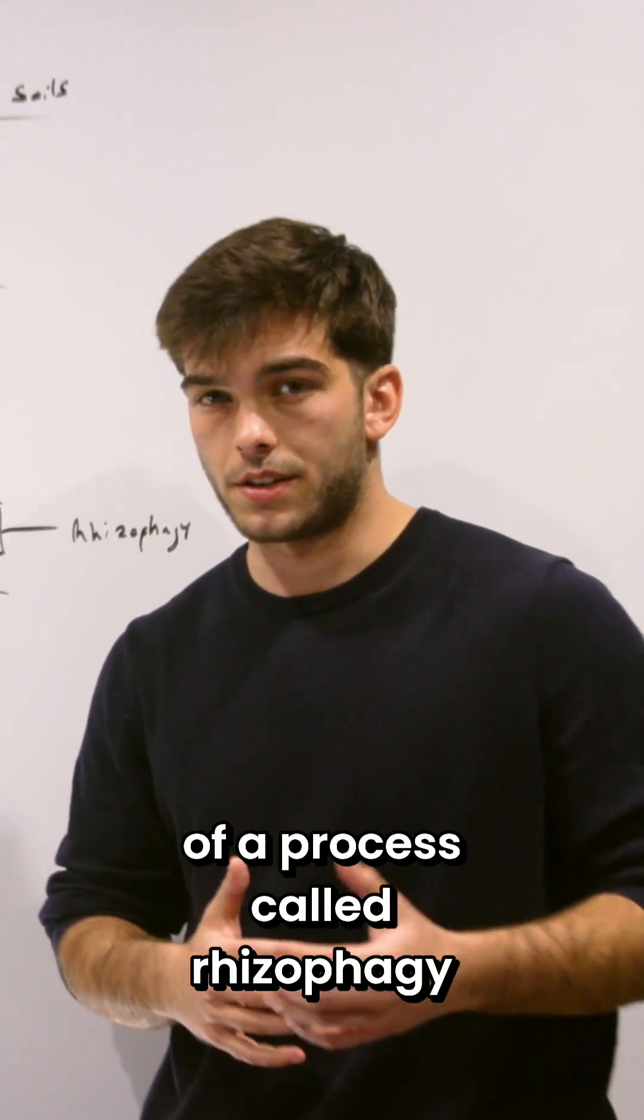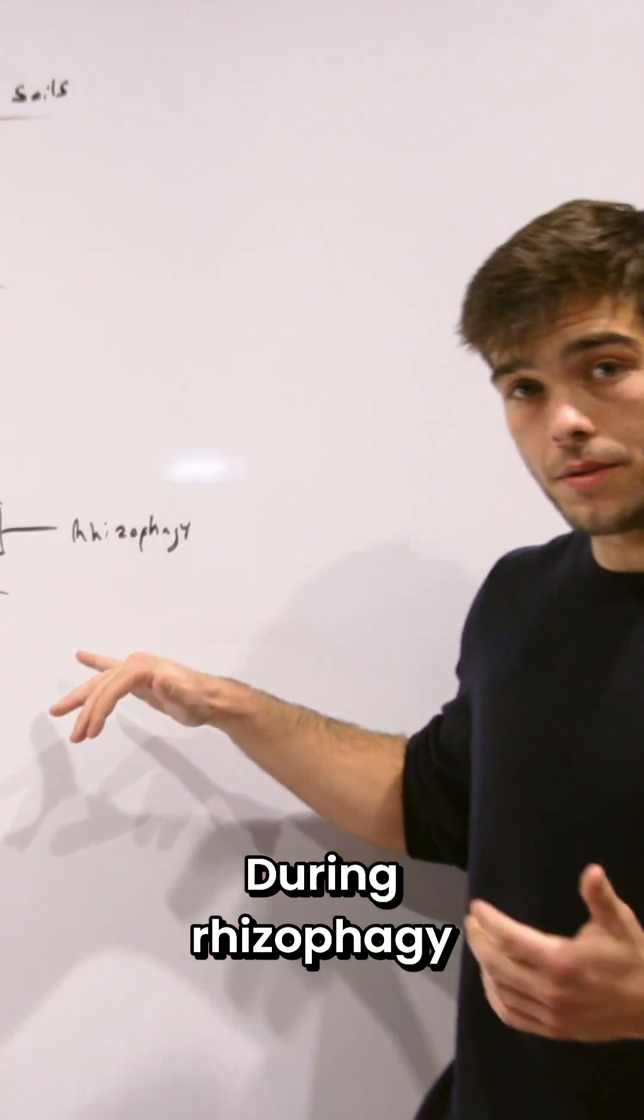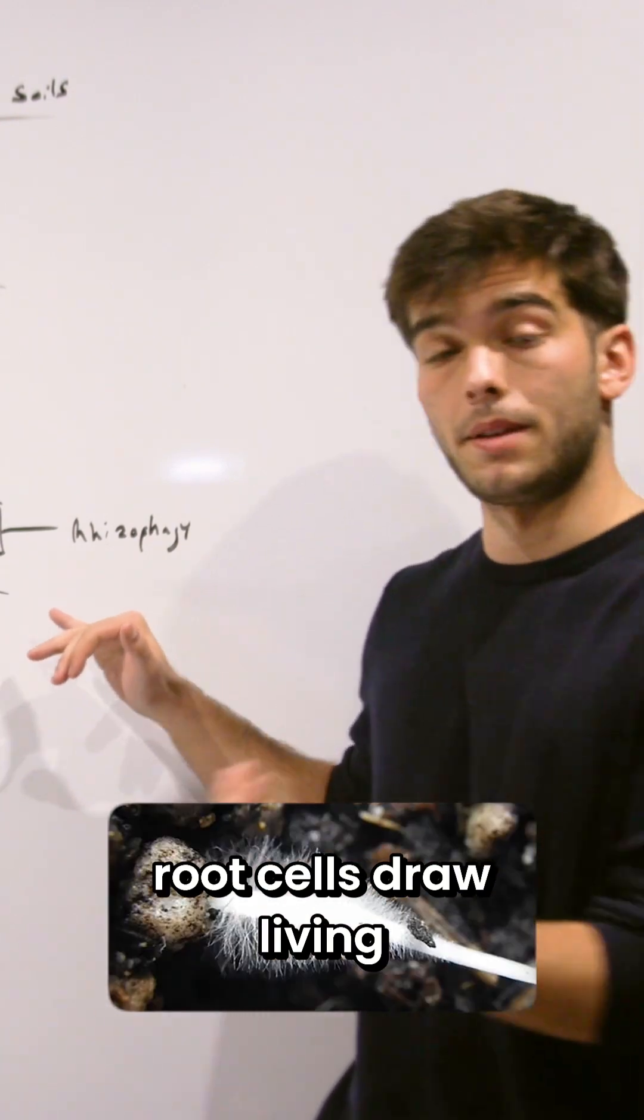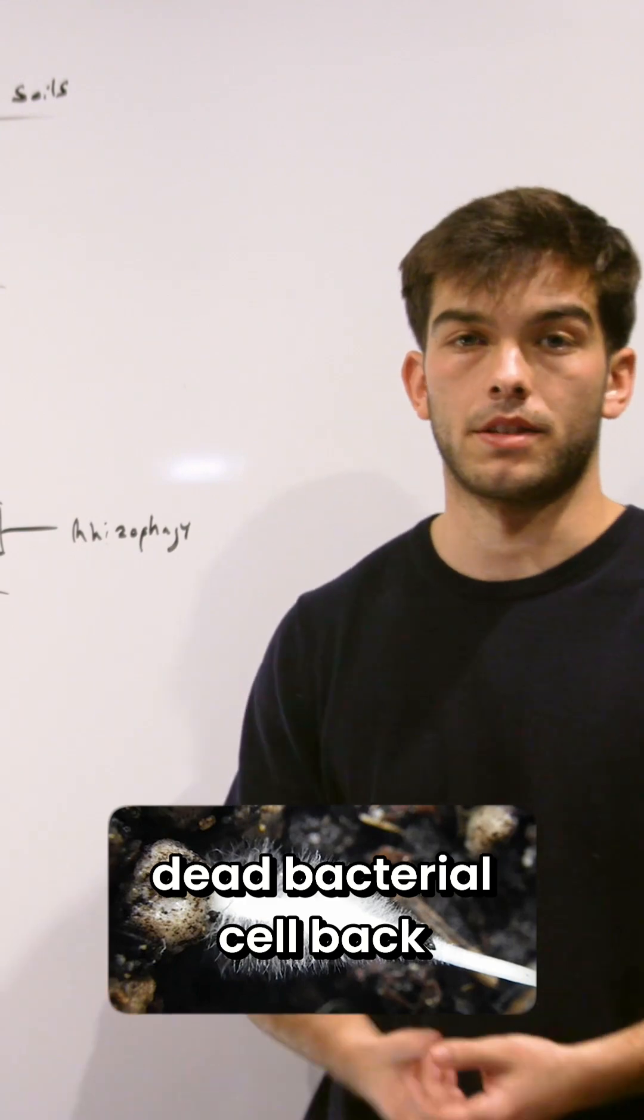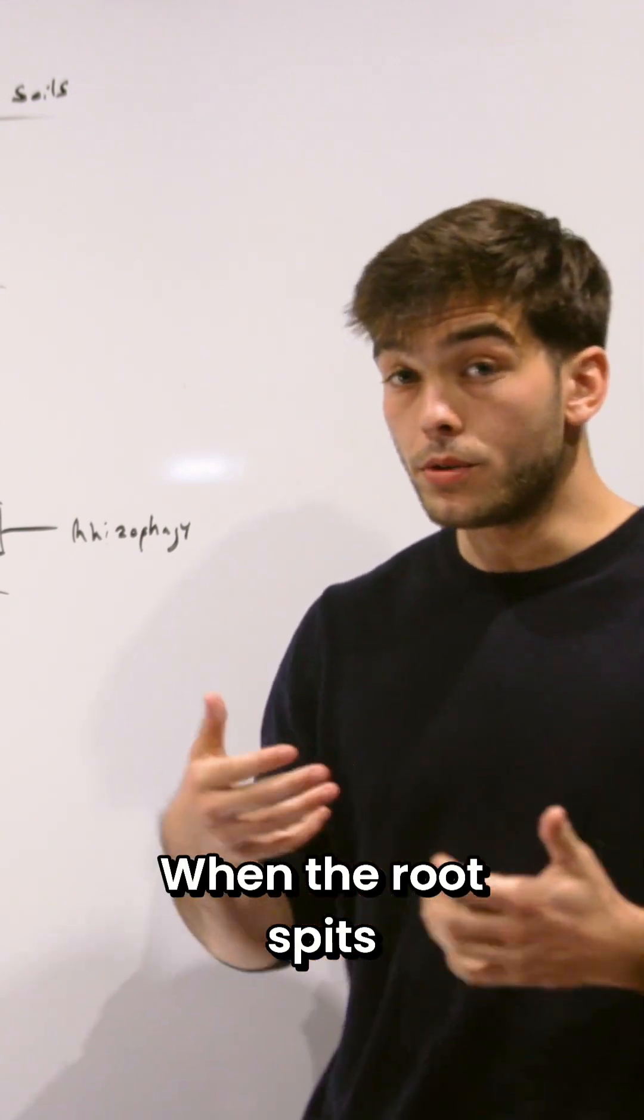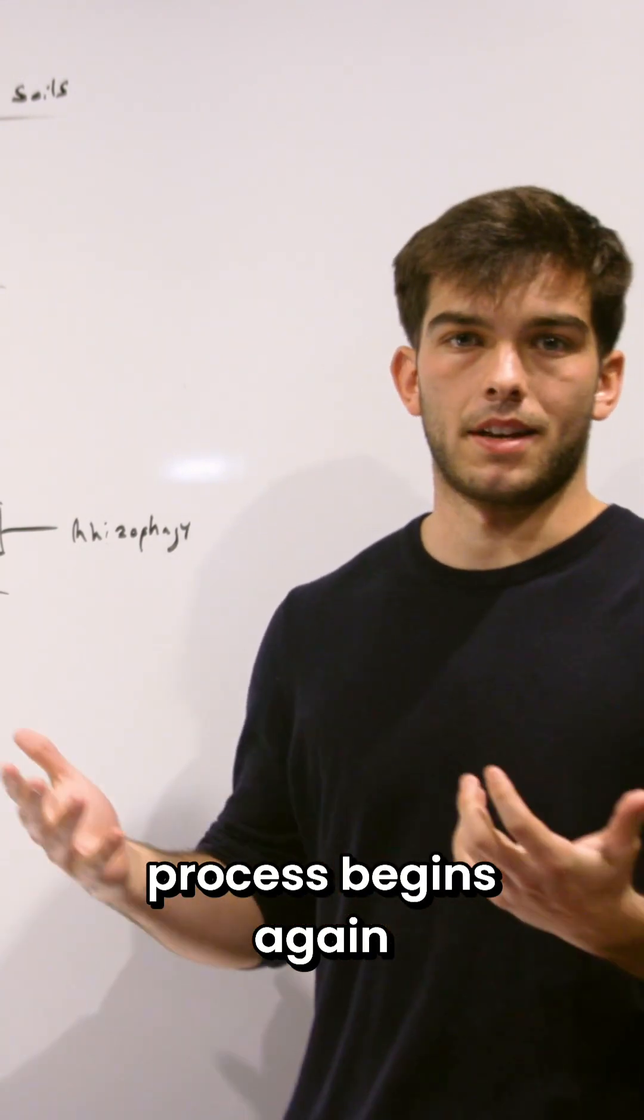Plants also make use of a process called rhizophagy. During rhizophagy, root cells draw living bacteria inside of the root, extract the nutrients, and release that dead bacterial cell back into the soil system. When the root spits them back out, they regenerate and the process begins again.